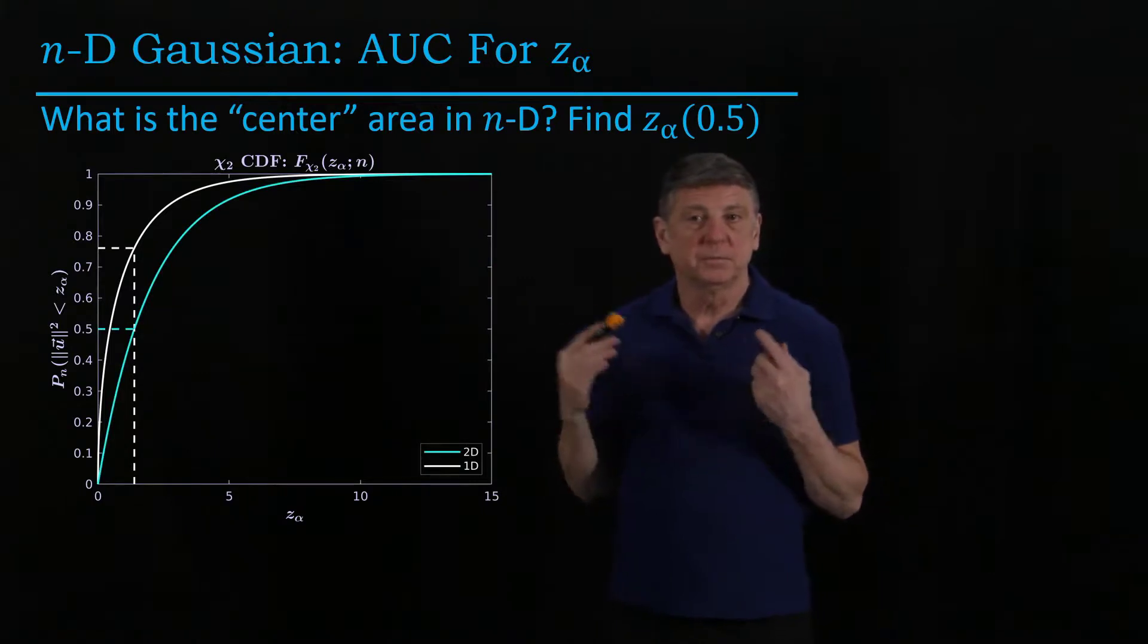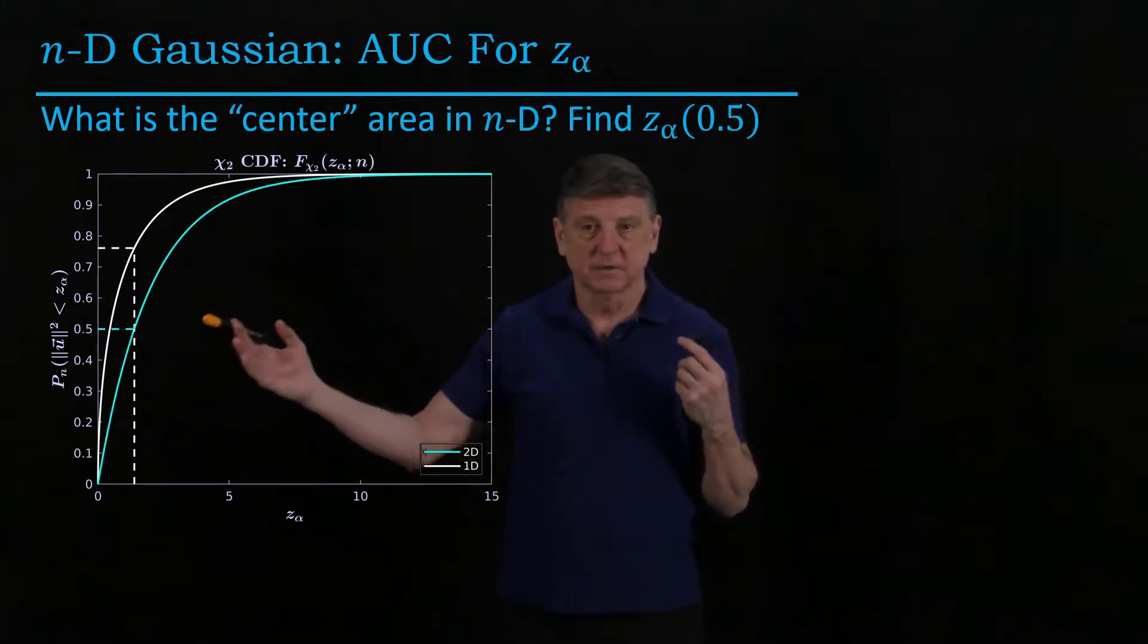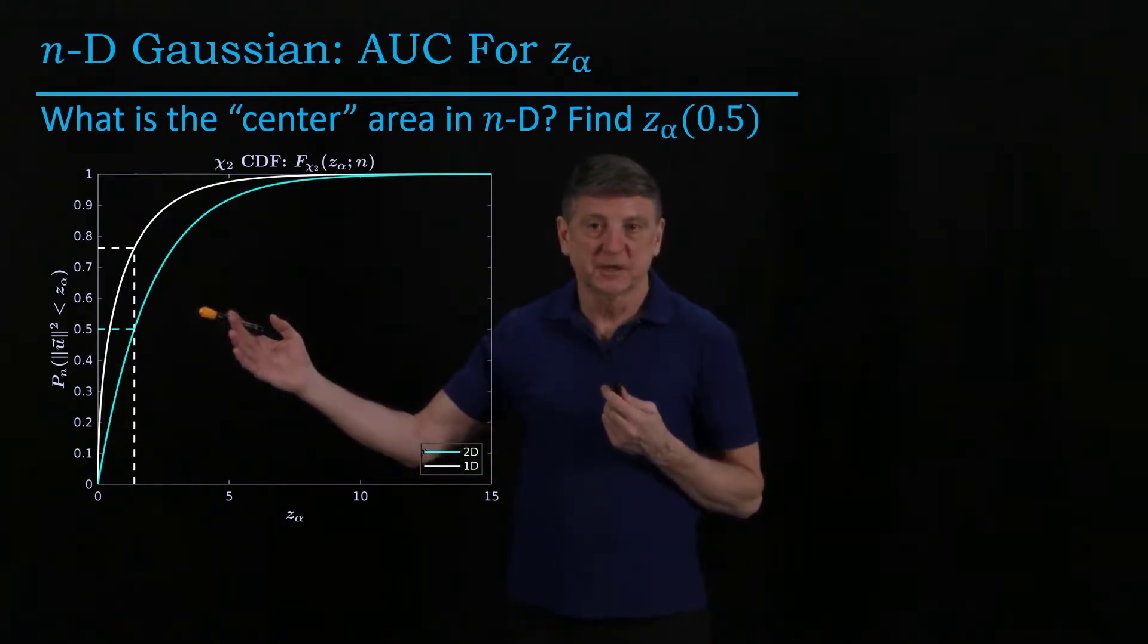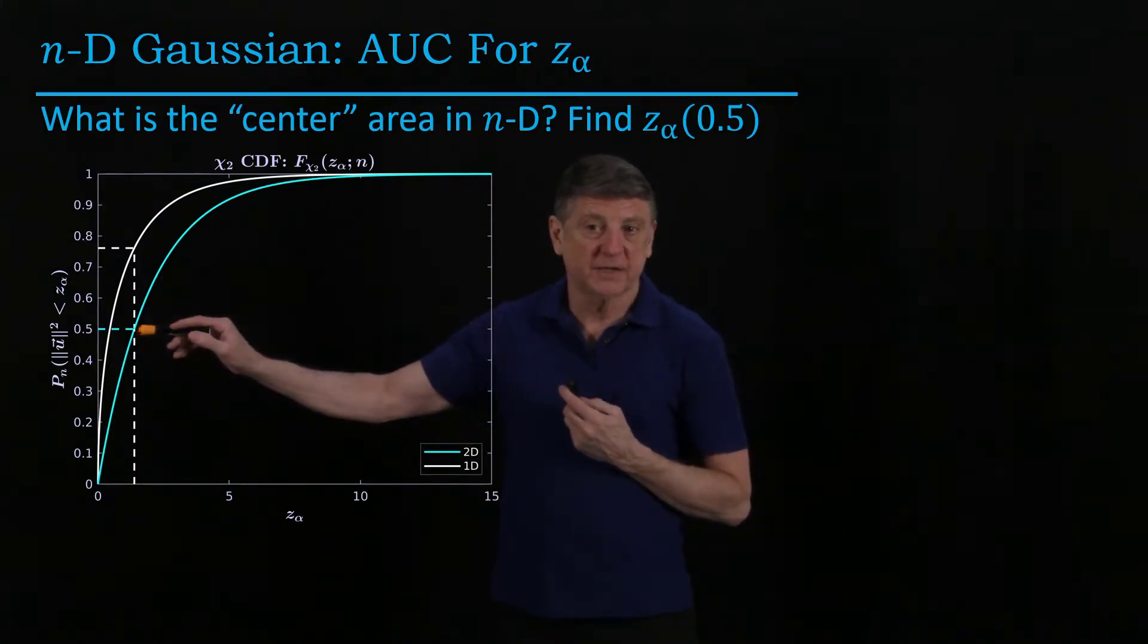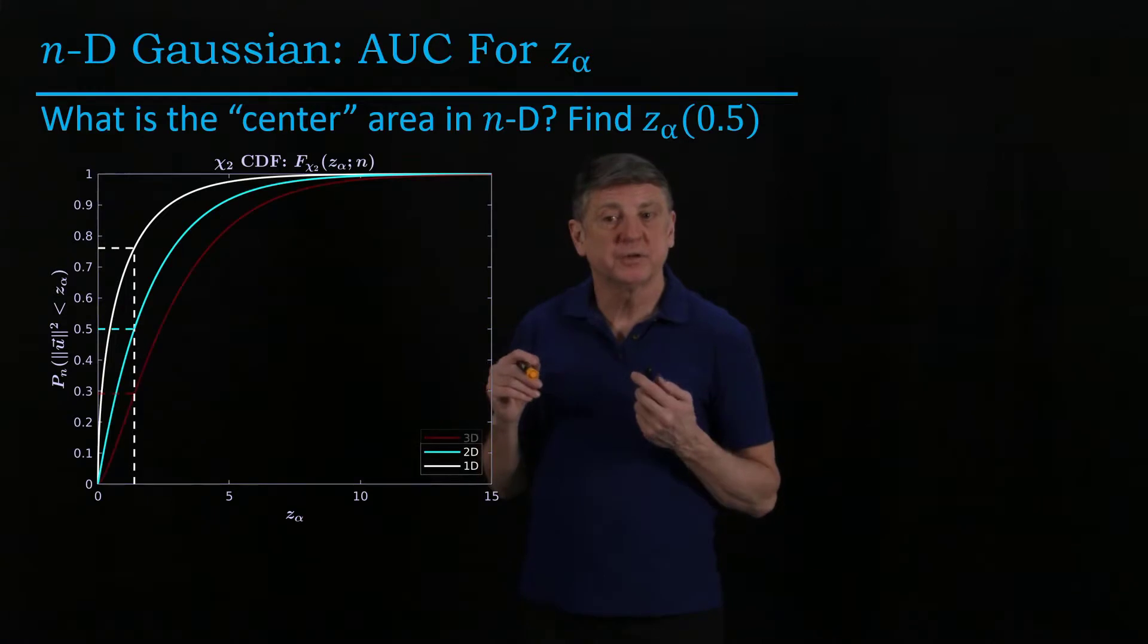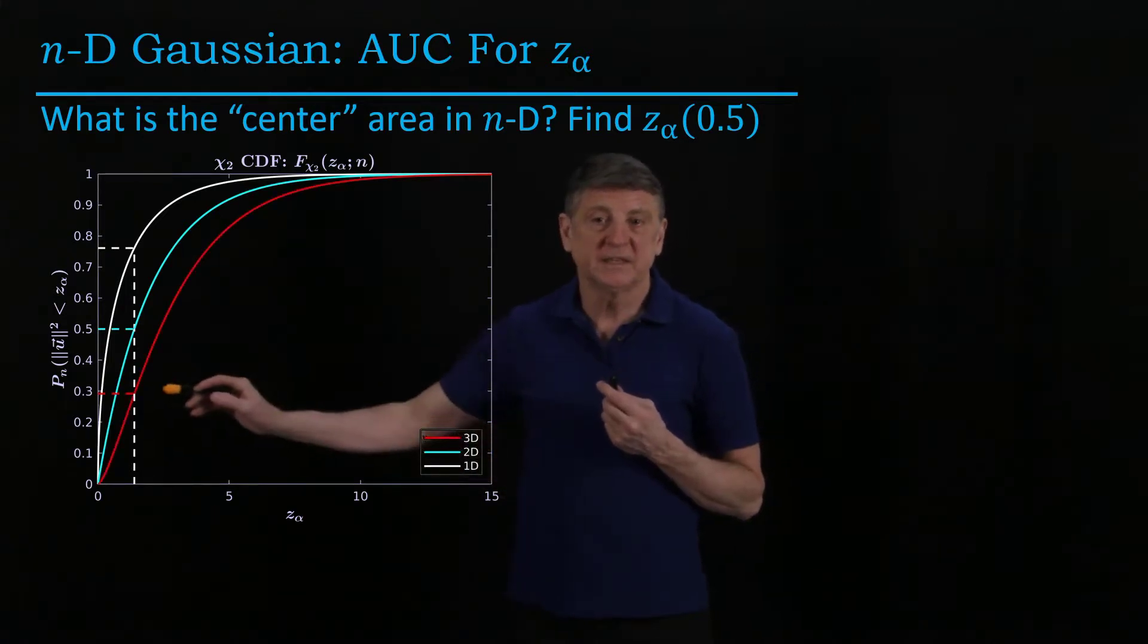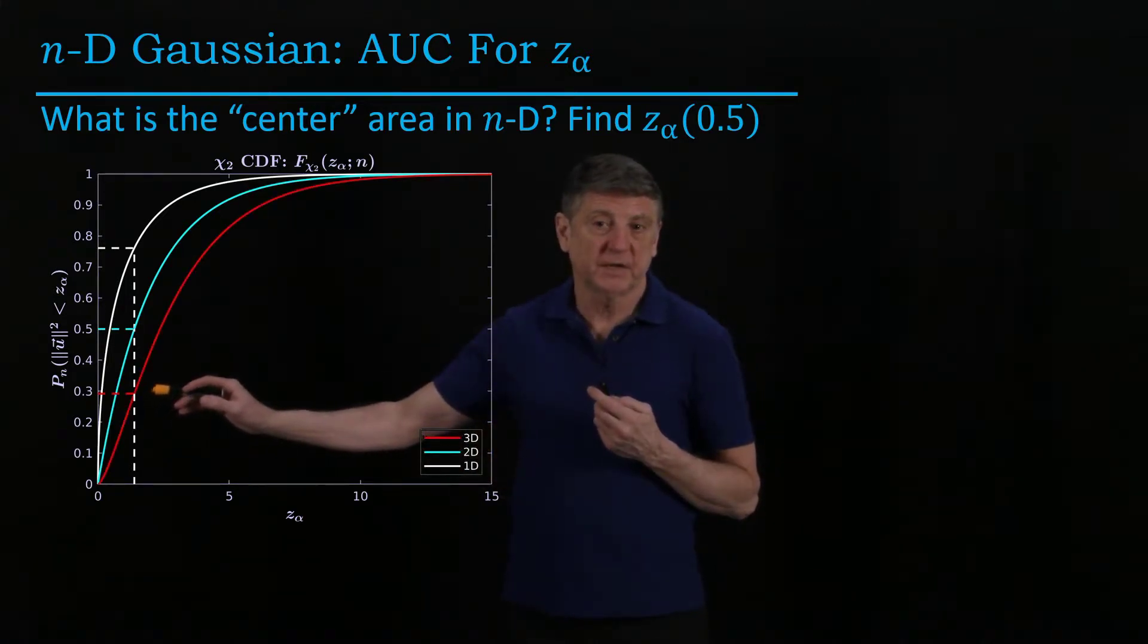When we compute this chi-squared cumulative distribution function for two dimensions, what we see is half of the data are located centrally. As we increase to three dimensions, we see that less than 30% are located centrally.